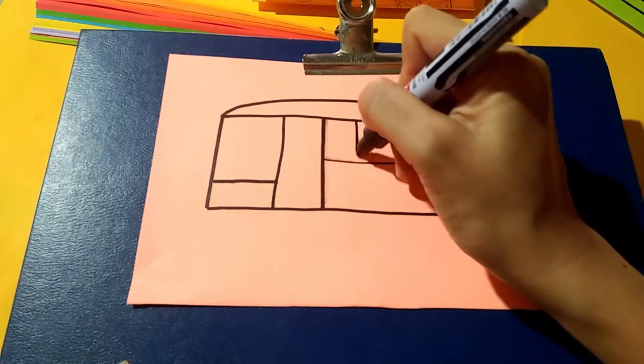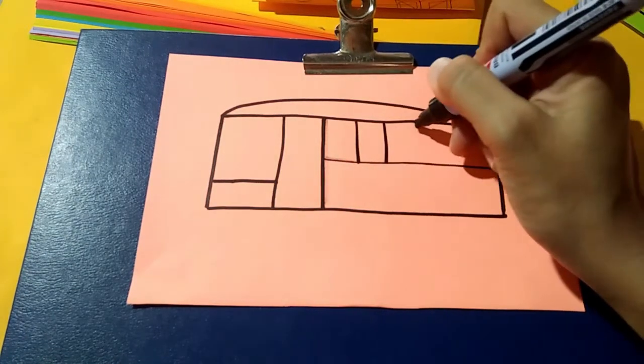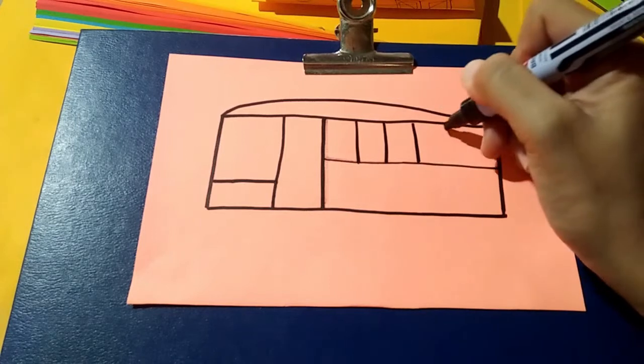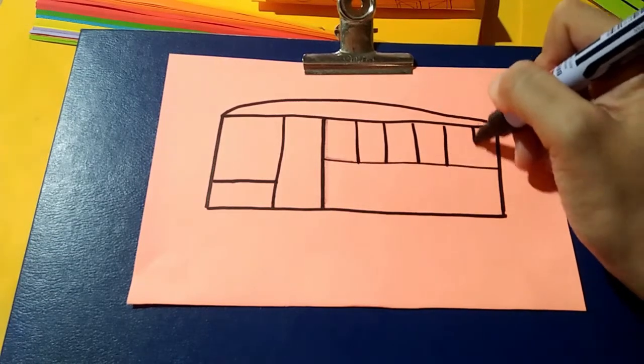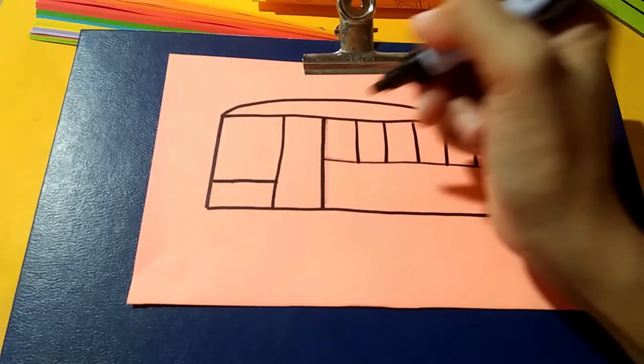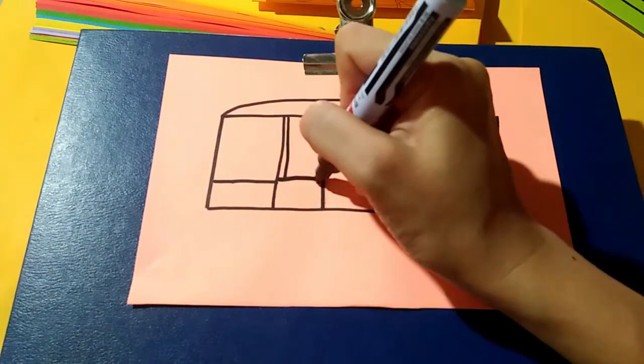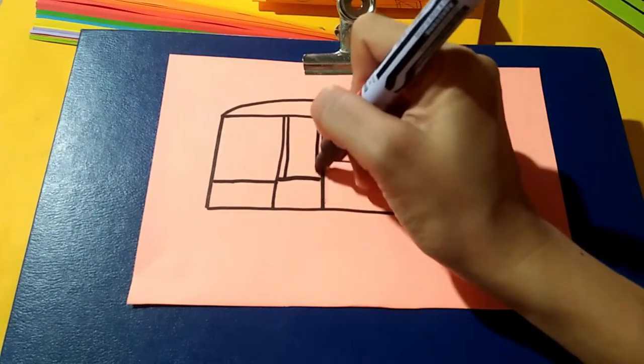Let's make short lines for the windows. Now, make another line here. Close, and then go down.